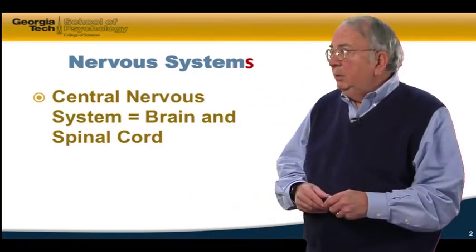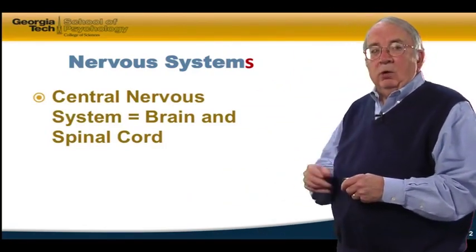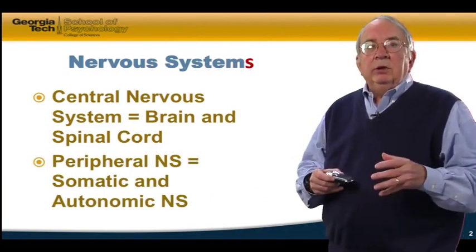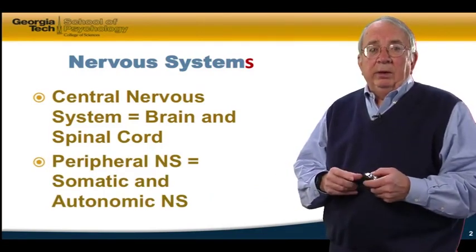First, we have the central nervous system, which consists of the brain and spinal cord, but we also have a peripheral nervous system, which are all of those nerve cells outside of the brain and spinal cord.